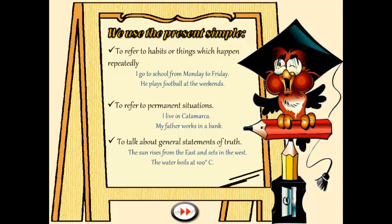El tercer uso se refiere a verdades generales — hechos referidos más que todo a la naturaleza. Cuando hablamos de facts, hechos verídicos referidos a la naturaleza, algo que no podemos cambiar. Por ejemplo, 'The sun rises from the east and sets in the west' se refiere a que el sol sale del este y se pone en el oeste. 'The water boils at 100 degrees Celsius' — el agua hierve a los 100 grados centígrados. Esos son verdades generales.